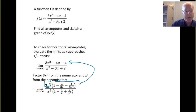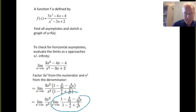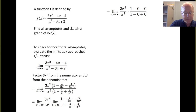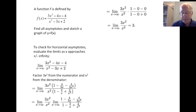We next use the fact that the limit of a product is the product of limits, which allows us to write this as a product of two limits: the limit as x goes to infinity of 3x squared over x squared, and the limit as x goes to infinity of this more complicated quotient. Now as x gets large, each of the fractions with an x in the denominator is going to go to zero, because the denominator gets very big. So in the second quotient, those fractions go to zero, leaving us with just 1, making the overall limit equal to 3.